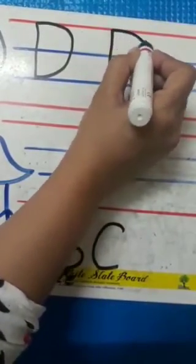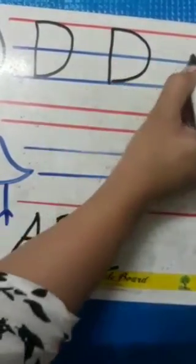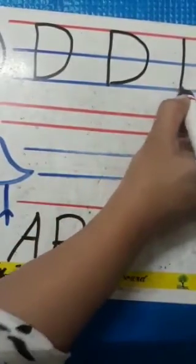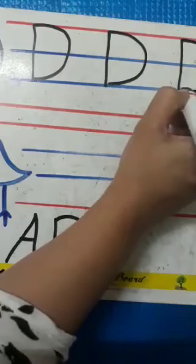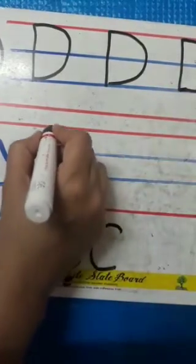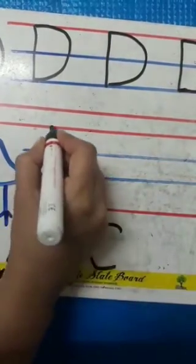D. D for duck. Once again, red to blue standing line, then one left curve. D.